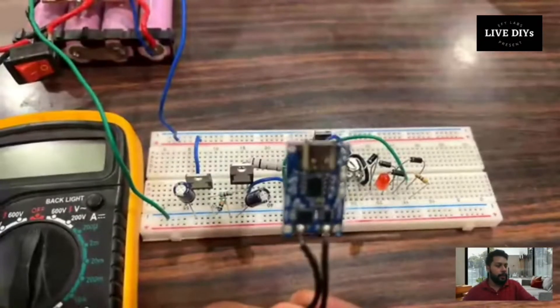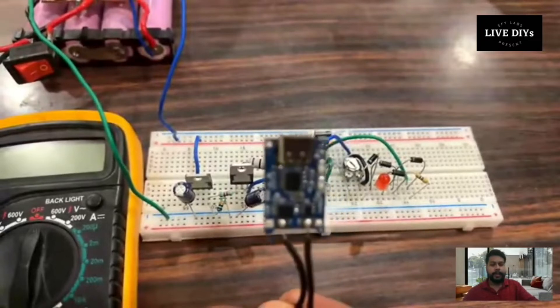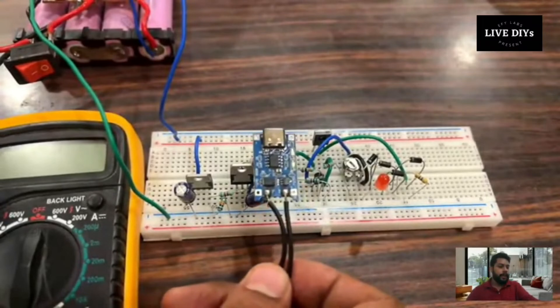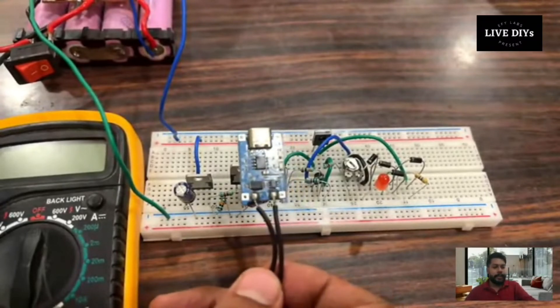The components used here are an LM317 voltage regulator, TL341 shunt regulator IC, resistors, capacitors, and a 5mm LED.